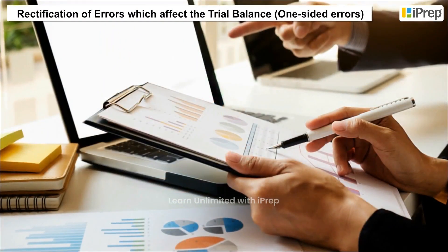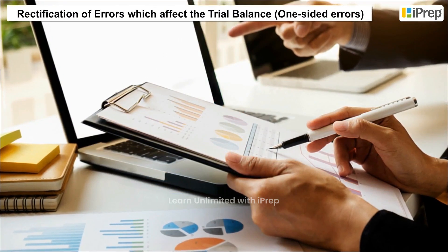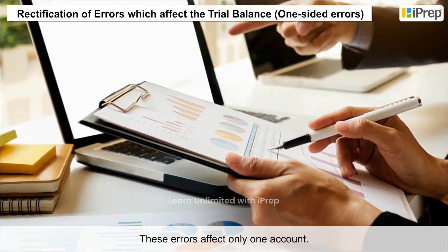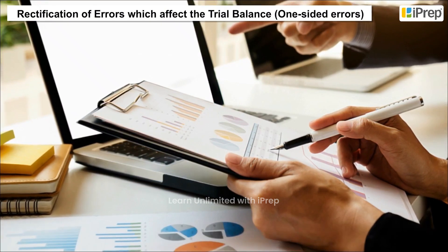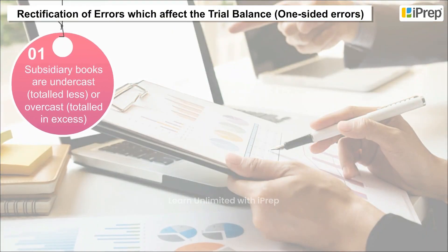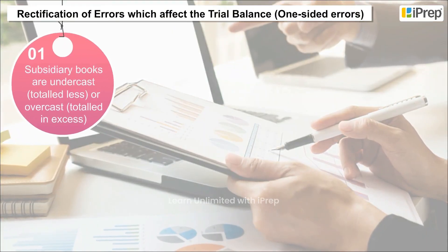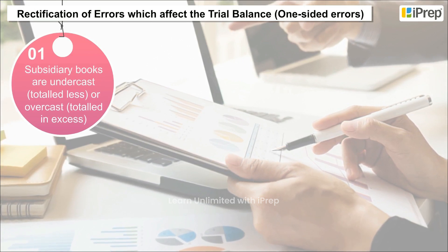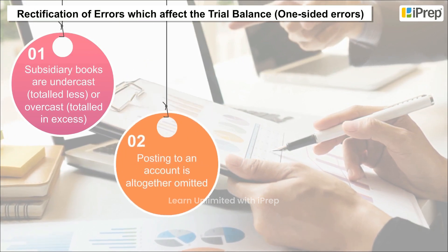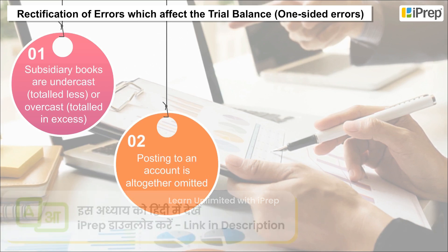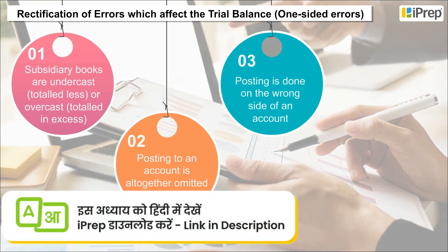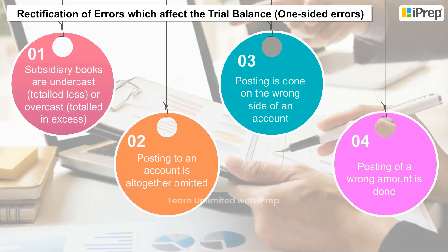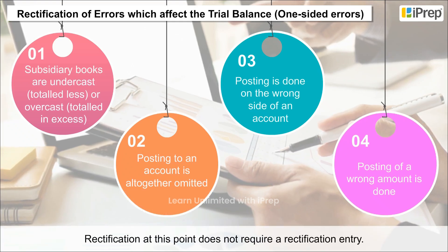Rectification of errors which affect the trial balance: One-sided errors affect only one account. Examples include subsidiary books that are undercast (totalled less) or overcast (totalled in excess), posting to an account being altogether omitted, posting done on the wrong side of an account, or posting of a wrong amount.